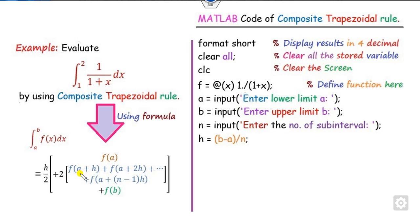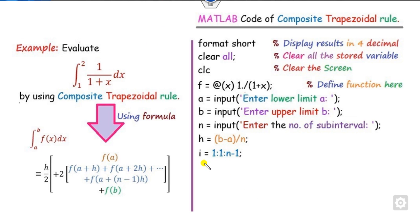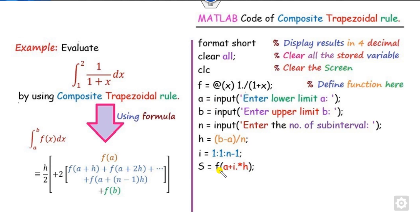Once H is defined, the intermediate points are A plus H, A plus 2H, A plus 3H, and so on. So we define index I from 1 to N minus 1 with increment 1. When I is 1, the point is A plus H; when I is 2, it is A plus 2H, and so on. We compute the function values F of A plus I times H and store them in S.